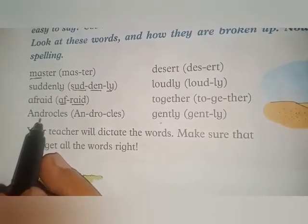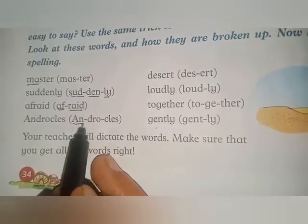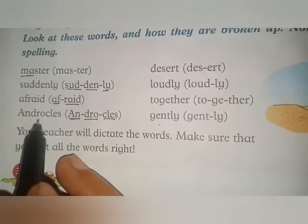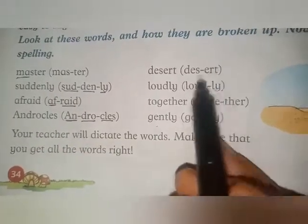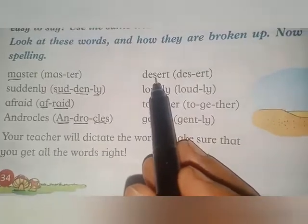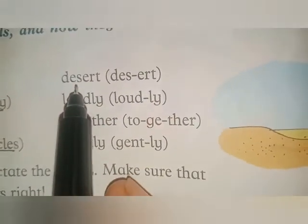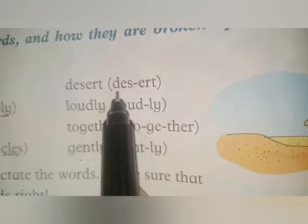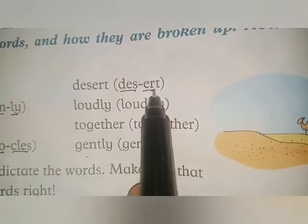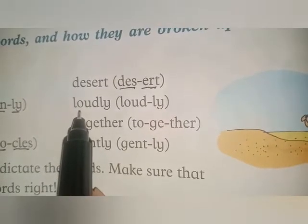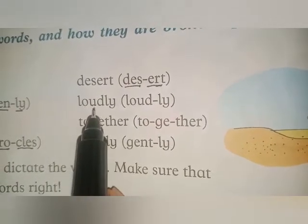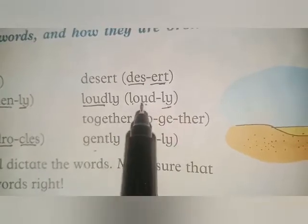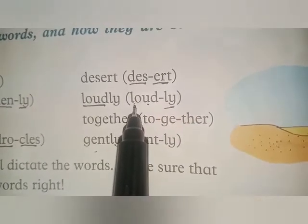The fourth word is very interesting because the story was based on this word — 'Androcles'. And now the next word: 'desert'. D-E-S — 'des', E-R-T — 'ert': desert. Now the next word: 'loudly'. L-O-U-D — 'loud', L-Y — 'ly': loudly. Now look at how the words are broken up — this is called a syllable.